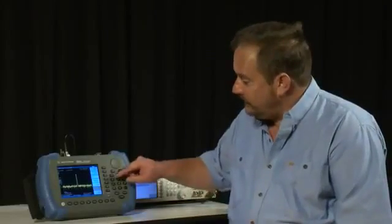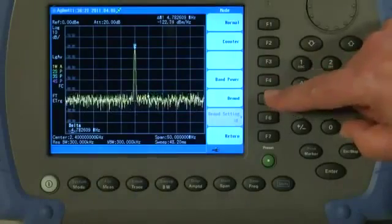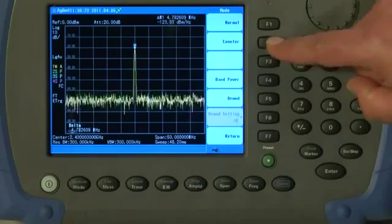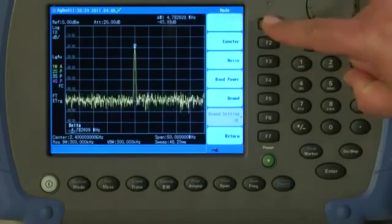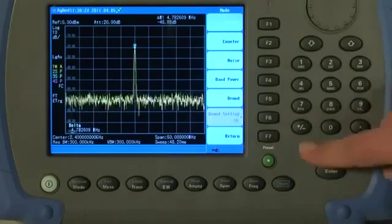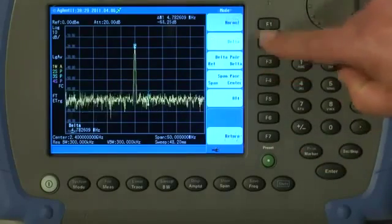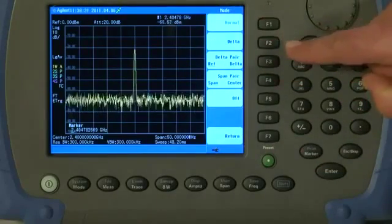You will also see there are other marker functions for things like band power and demodulation. One I like very much is the counter marker. If I just go back to Normal first of all, and press the Mode from Delta back to Normal.